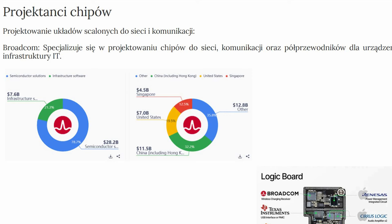Dopóki Broadcom jest liderem i ma najwyższą wydajność oraz współpracuje z Apple – to świetny biznes. Mają marże 70%. Udział Chin zmniejsza się, ale nadal jest istotny – stanowi pewne ryzyko. Projektowanie chipów do komunikacji i sieci IT nie jest w ostatnich latach podatne na negatywne ustawodawstwo – to ogromna zaleta. Jeżeli nie jesteśmy podatni na negatywne ustawodawstwo, w ramach tych trzech czynników – politycznych, ekonomicznych i sentymentu – nie musimy obserwować legislacji na razie.